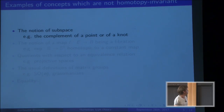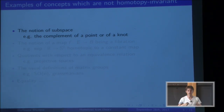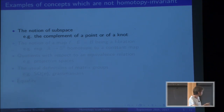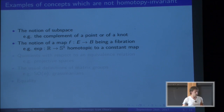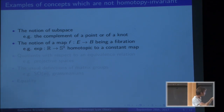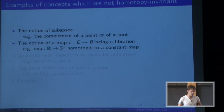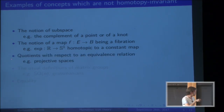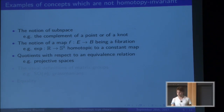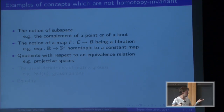Several concepts are not homotopy invariant and so cannot be used directly. You cannot talk about subspaces, like the complement of a point of a knot, because that relies on the topological structure. You cannot really talk about whether a map is a fibration or not, since it's not stable under homotopy — for instance, the universal cover of S¹ is a map from ℝ to S¹, homotopic to a constant map, which is not a fibration. Quotients are also very problematic.